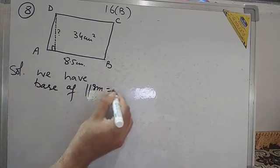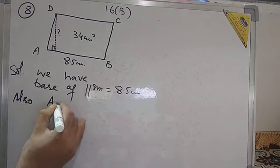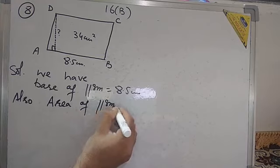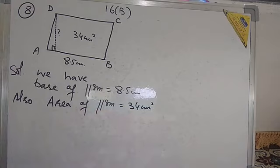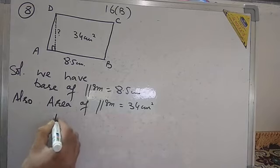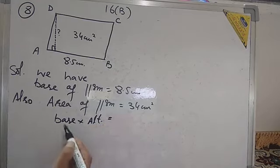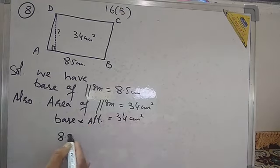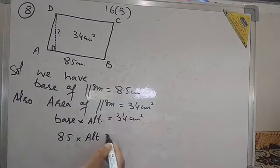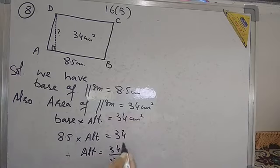In the solution, the base of the parallelogram is equal to 8.5 cm. The area of the parallelogram is also given, which is equal to 34 cm². We know that the area of a parallelogram is base into altitude. So, area equals base into altitude, which is 34 cm². Base is 8.5, and altitude we have to find. Therefore, altitude is equal to 34 divided by 8.5.